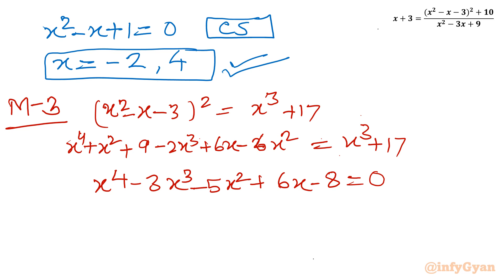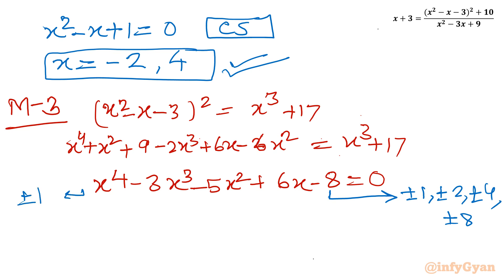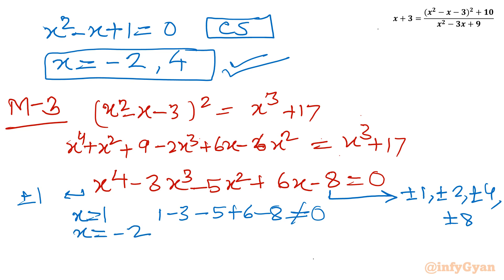Using the rational root theorem, the eligible factors of 8 are ±1, ±2, ±4, ±8. Since the leading coefficient is 1, the possible rational roots are the same. Testing x = 1: 1 - 3 - 5 + 6 - 8 ≠ 0. Testing x = -2: 16 + 24 - 20 - 12 - 8 = 40 - 40 = 0. Yes, it is zero, so x = -2 is a root.